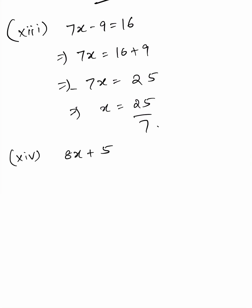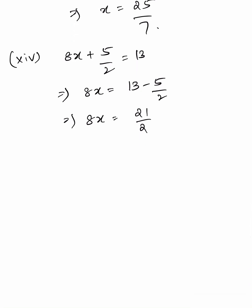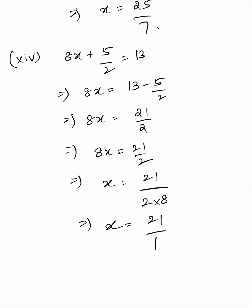Fourteenth: 8x plus 5 by 2 equals 13, so 8x equals 13 minus 5 by 2, giving 8x equals 21 by 2, therefore x equals 21 divided by 2 into 8, which equals 21 by 16.